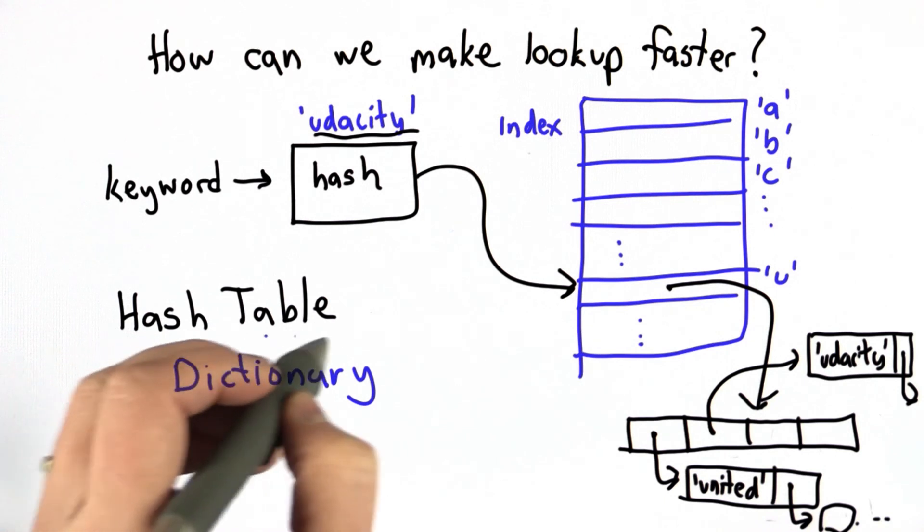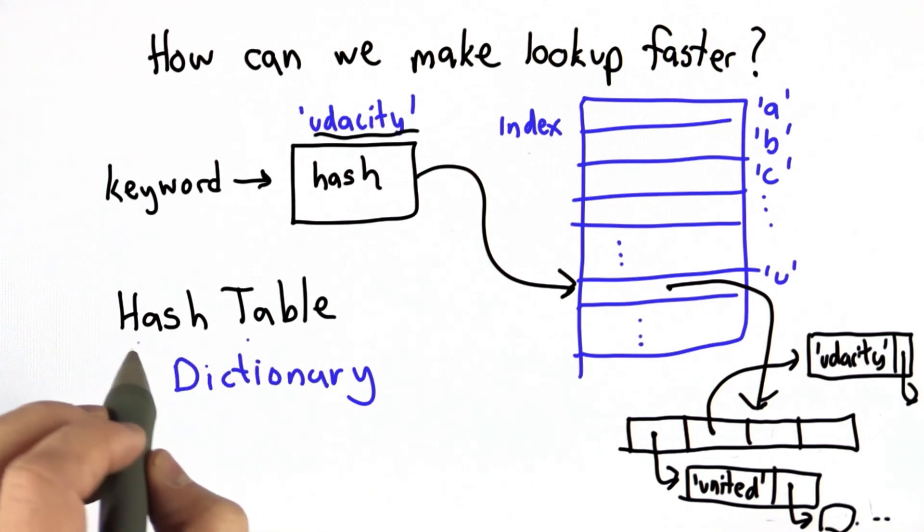But before we do that, we're going to implement it ourselves. We're going to make sure that we understand how the hash table works by writing all the code to do it ourselves. And then we'll switch to using the built-in Python type.